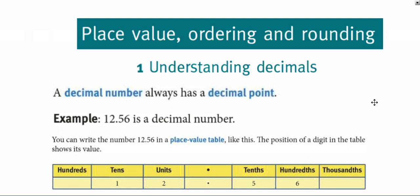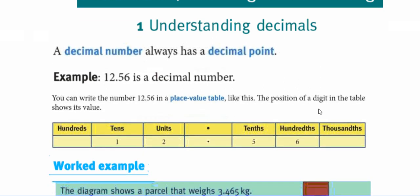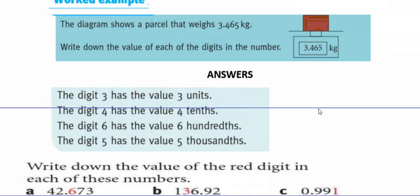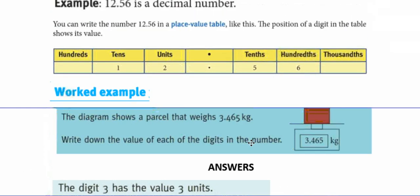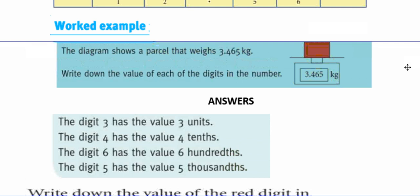Hello everyone. Today we'll be discussing place value, ordering and rounding. Without wasting time, let us begin understanding decimals. Here we have some notes, but let us try to work out some questions. The example says the diagram shows a parcel that weighs 3.465 kilograms. Write down the value of each of the digits in the number.